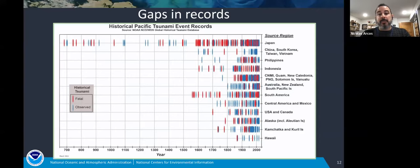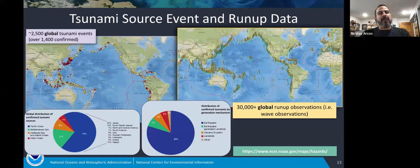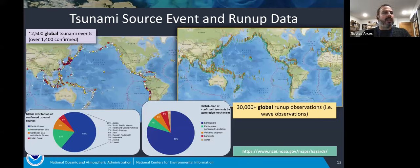To give you a snapshot of how much data we have: we have about 2,500 global tsunami events, 1,400 of those confirmed, and over 30,000 global tsunami run-ups. You can see those on a map viewer linked from our site. As far as general statistics — generation mechanisms: earthquakes account for 80%. And as you would imagine, the Pacific is where most of the tsunami event sources are. This is the kind of information that's most commonly asked for and that you can get from our database.